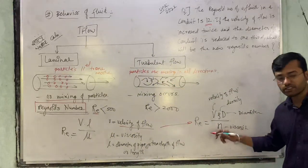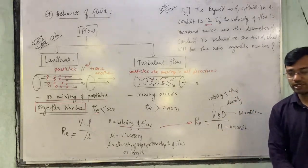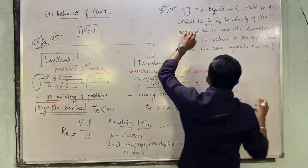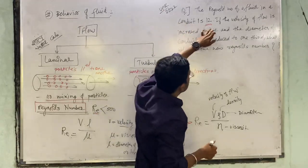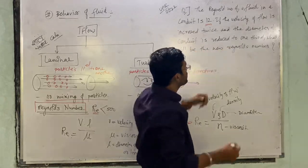Always remember viscosity is the divider. So if a question comes, you'll understand better. For example, the Reynolds number of fluid in a pipe is 12. If the velocity of the flow is increased twice and the diameter of the pipe is reduced to one-third.